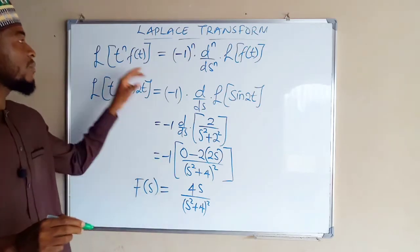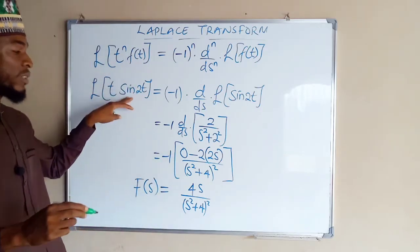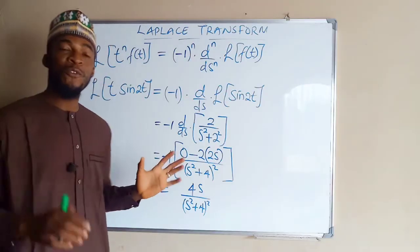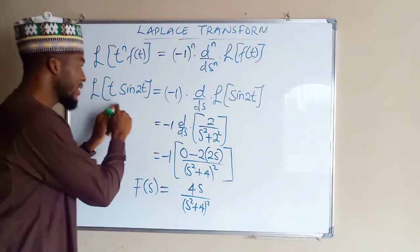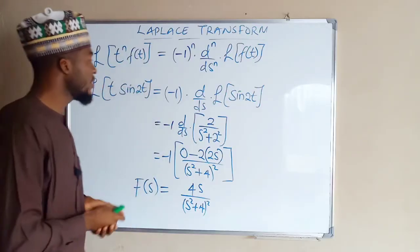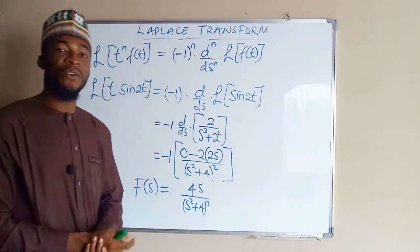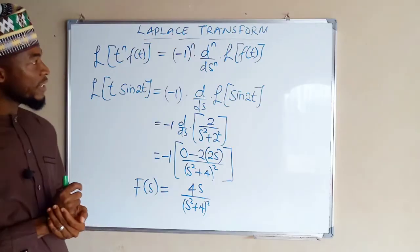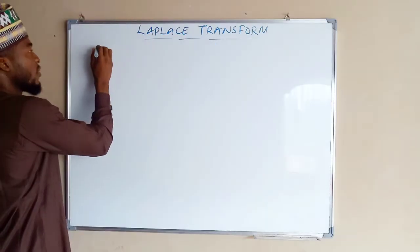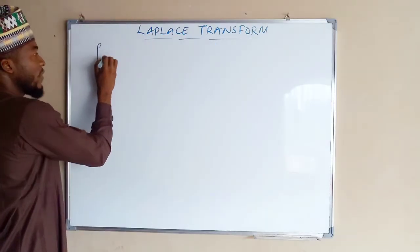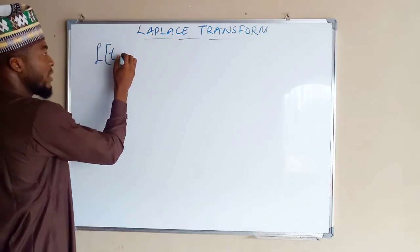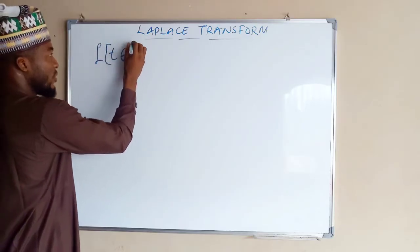Simplifying: 0 minus this gives negative 2 times 2s, which is negative 4s. Multiplying by the outer negative 1 gives positive 4s, divided by s squared plus 4, all to the second power. So this is our Laplace transform result. The method remains the same for all other functions like t times cos t, t times exponential t, and so on. Now there is another one I want to display: suppose we are asked to find the Laplace transform of t multiplied by e^t sine t.